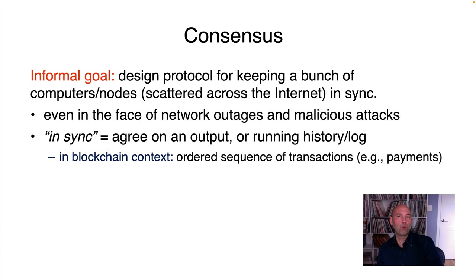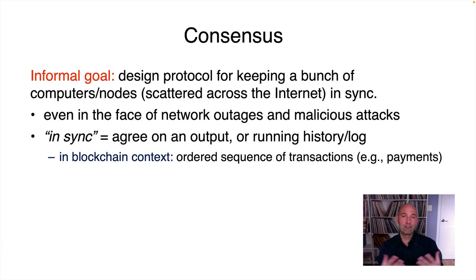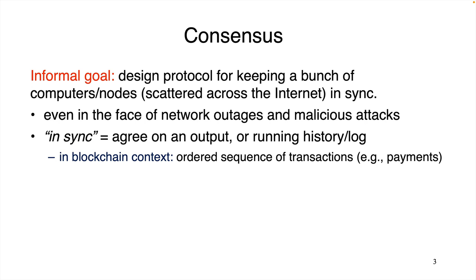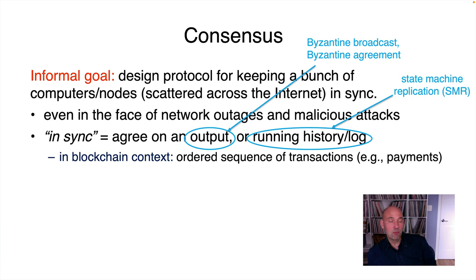What do I mean by keeping machines in sync? The answer depends on which consensus problem we focus on. There are single-shot consensus problems, where the machines eventually conclude with an output and all agree on that output. What's actually more relevant for a blockchain context is multi-shot consensus, where you're coming to consensus over and over again. Here, all of the machines are basically maintaining a running log of events — an ordered sequence of things that have happened — and you'd like all nodes to stay in sync on that log. Examples of single-shot consensus include the Byzantine agreement problem and Byzantine broadcast. We're going to be much more focused on multi-shot consensus, specifically on a problem known as state machine replication, or SMR.